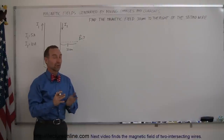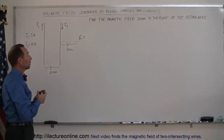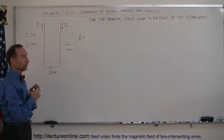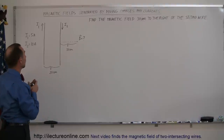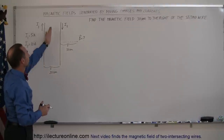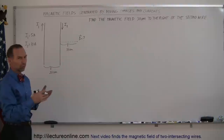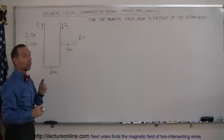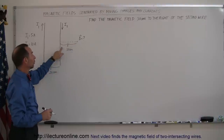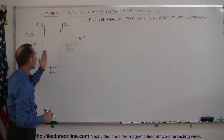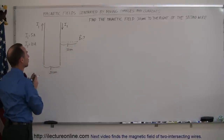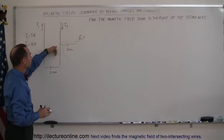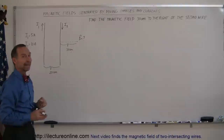Welcome to our lecture online. Here's a straightforward example of how we apply the equation found in the previous example. Assume that you have two parallel wires: one carries a current upward, the other carries a current downward, assuming the wires are infinitely long relative to the distance away from the wire. What is the magnetic field at a location 30 centimeters to the right of the second wire, if the two wires are 20 centimeters apart, the current upward in the first wire is 5 amps, and the current downward in the second wire is 10 amps?